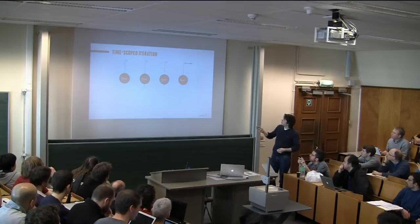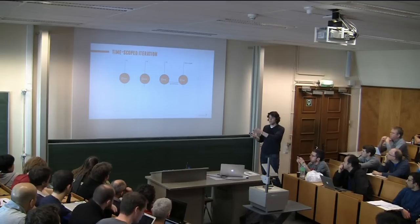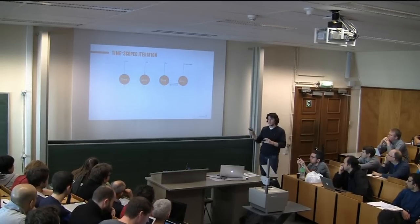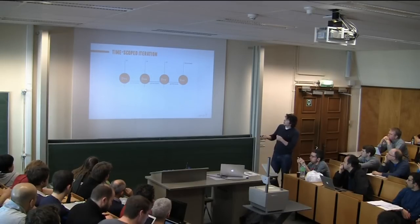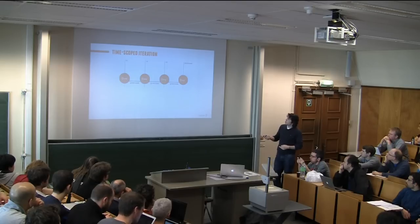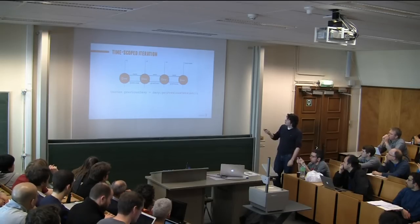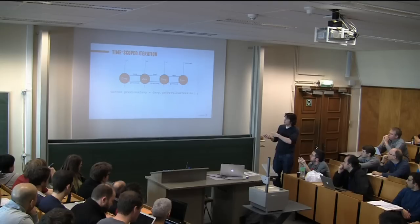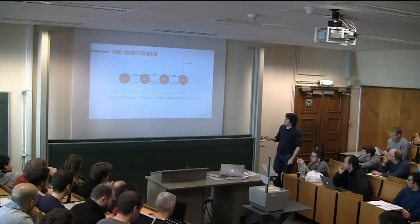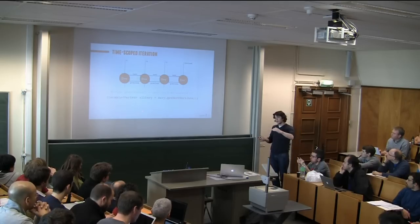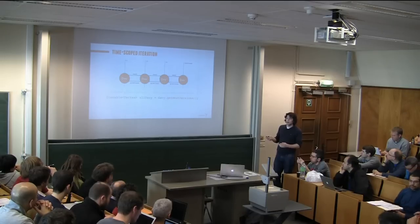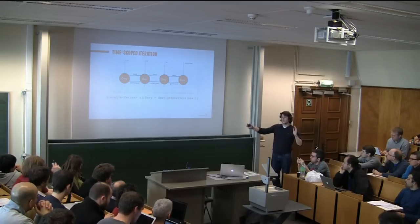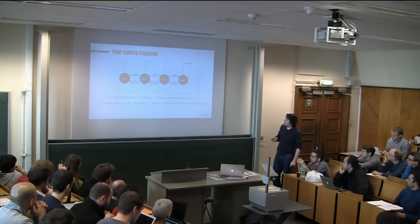So we wanted something more performant and easier to use. It's called time-scoped iteration. You start at a particular node and it's basically an iterator. You can say get me the previous version, and it's like a direct pointer from this version of the node to the previous one - you don't need to do fancy queries. It just gives you automatically the previous version. Of course we can go back, but also we can do the opposite: if we're at the original version, we can go in the opposite direction again. How does that look in the API? It's very simple. If we are at some version of the node, we can just say get me the previous version, which gives you back a vertex that is the previous version.